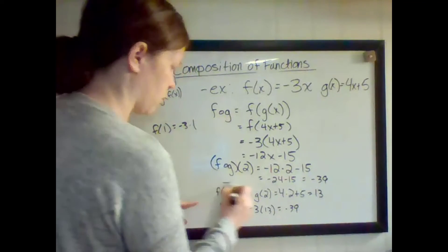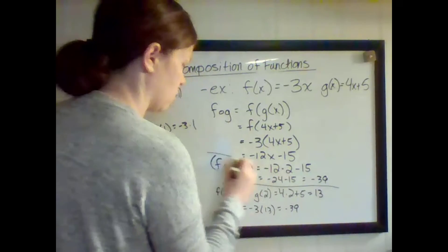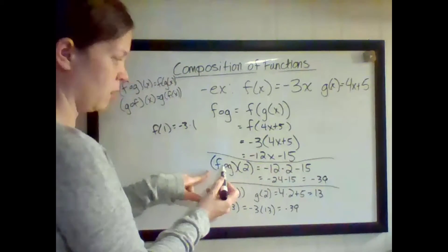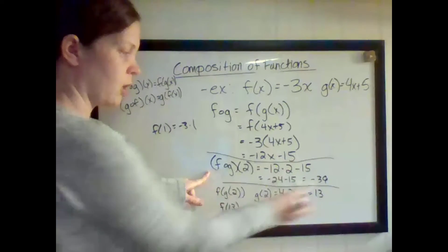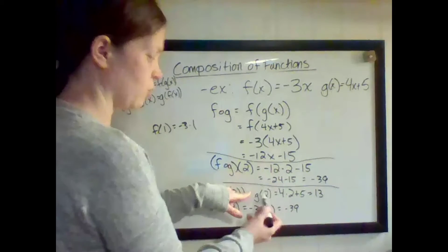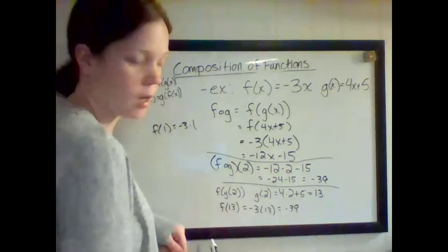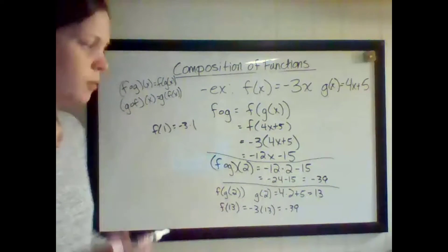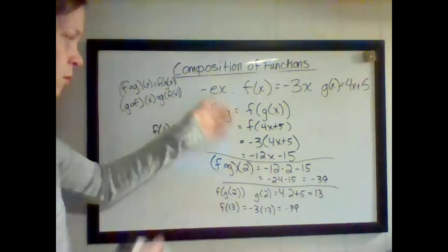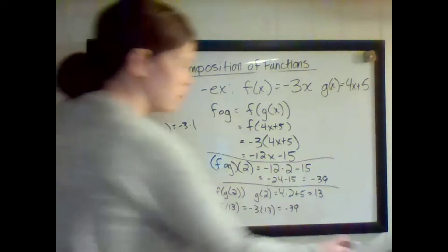So notice, both of these ways. Here I'm using the already composed function. I get negative 39. Here I do it one at a time. I do G, then I do F of whatever that is. Still get the same answer. So it works.